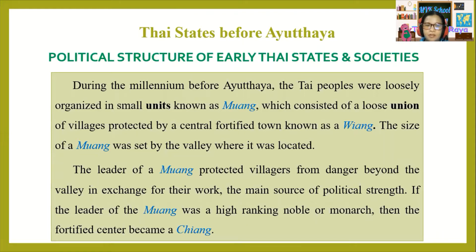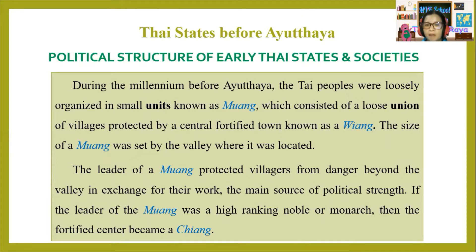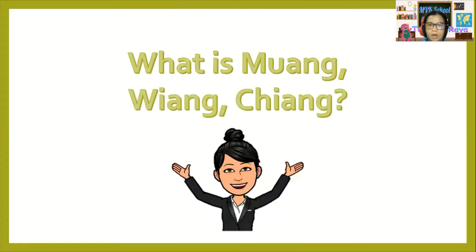The size of a Muang was set by the valley where it was located. The leader of a Muang protected villagers from danger beyond the valley in exchange for their work, the main source of political strength. If the leader of the Muang was a high-ranking noble or monarch, then that fortified center became a Chiang.